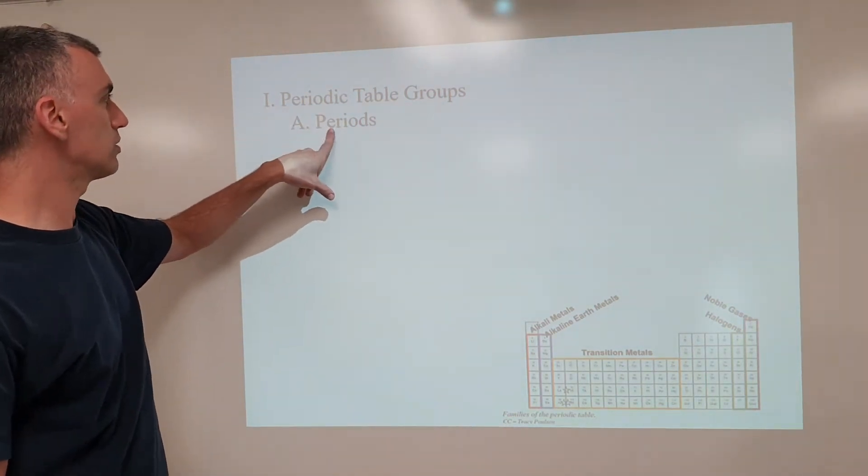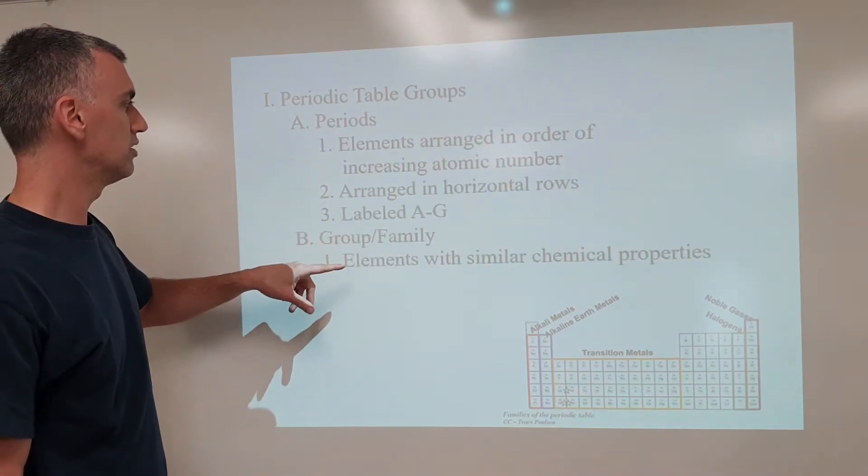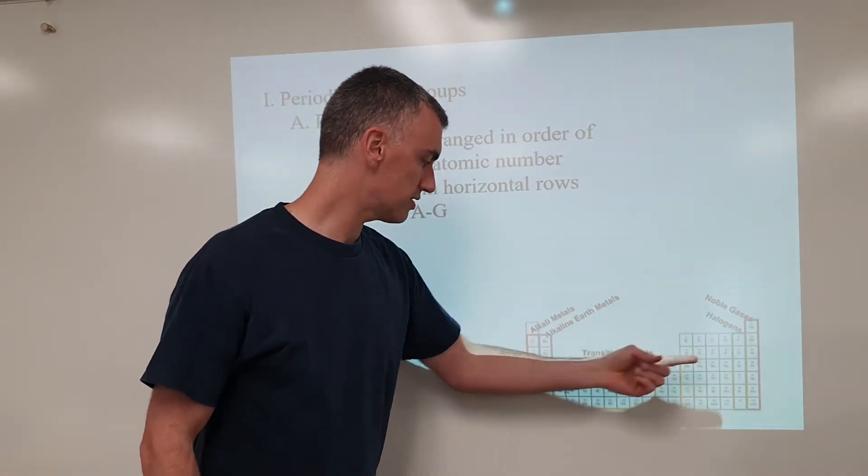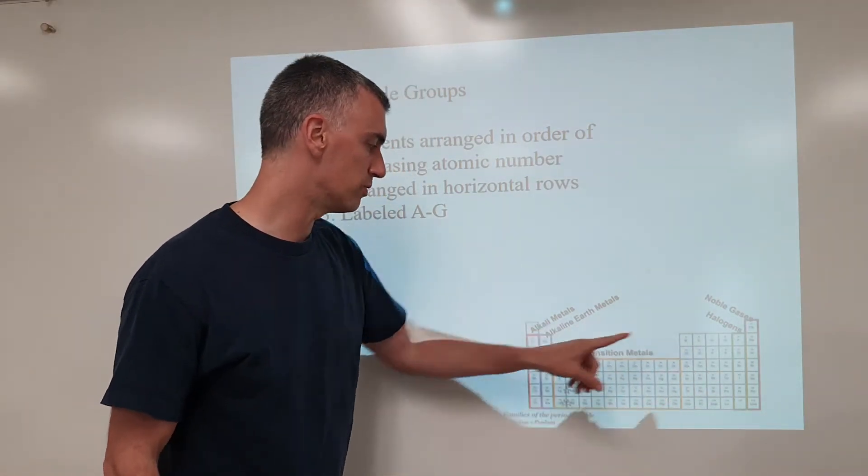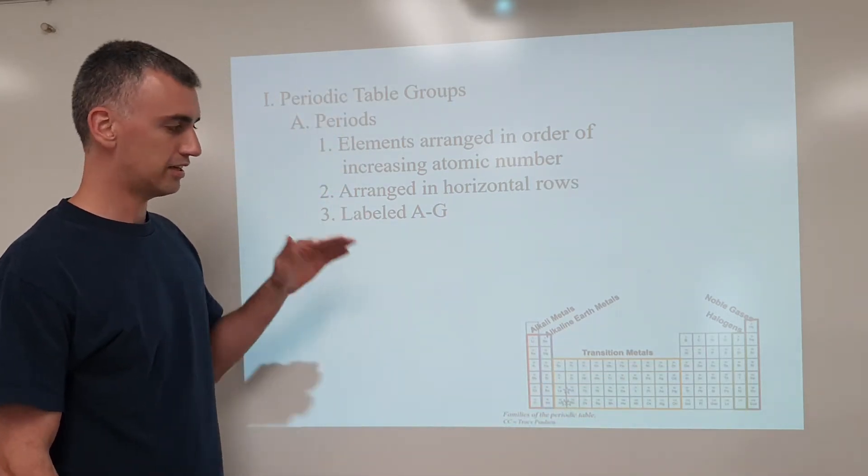So one of the things we got to be able to do is describe the way it's organized. One of the terms is a period. The period is the horizontal row that sees them organized with the number going up as they move toward the right. They are labeled A through G.